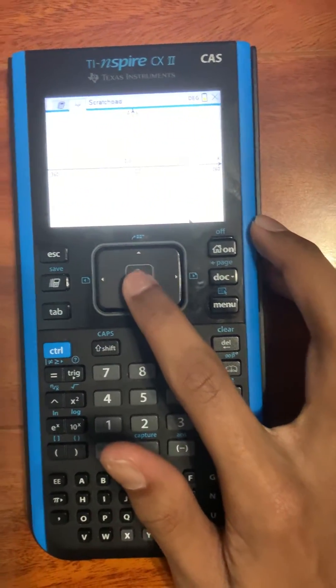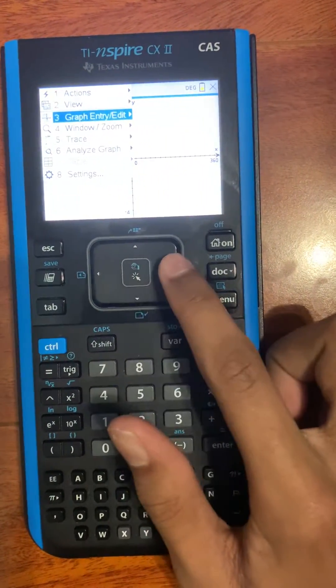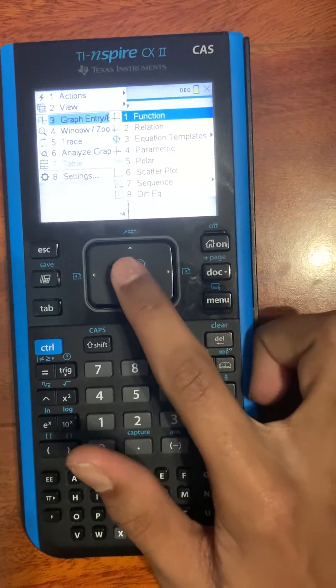Press OK and go to menu again. Press graph entry slash edit and function.